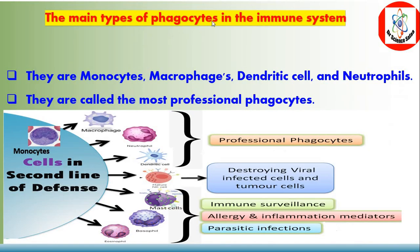The main types of phagocytes in the immune system are monocytes, macrophages, dendritic cells, and neutrophils. They are called the most professional phagocytes, as shown in this picture — monocytes, macrophages, neutrophils, and dendritic cells.